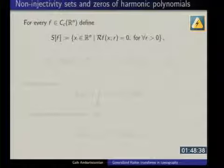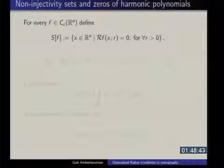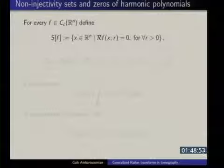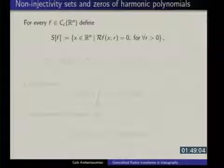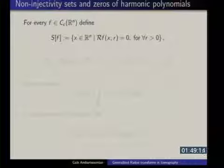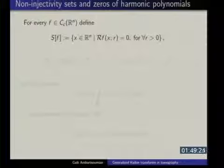I want to formulate a couple of classical results that have been around for about 20 years, but first I need some preparation. For a given function f — everything in the next few slides is in R^n — S(f) is the set of all points such that you are sitting at that point and all the integrals along circles of any radius are zero. So you are sitting at x, you measure the integrals of your function along concentric circles centered there, and all of those integrals are zero for all R.